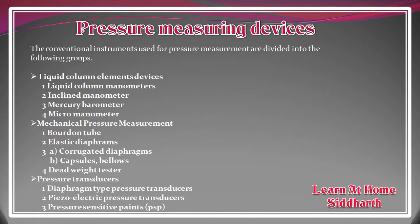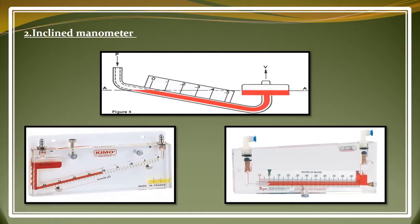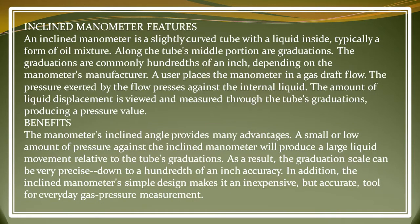The second device is the inclined manometer. As you can see in the figure, an inclined manometer is not very different from a U-tube manometer. The basic difference is that one leg is inclined. This allows us to measure a small pressure difference with better response. An inclined manometer is a slightly curved tube with a liquid inside, typically an oil mixture, along the middle portion with graduations commonly in hundredths of an inch depending on the manufacturer.